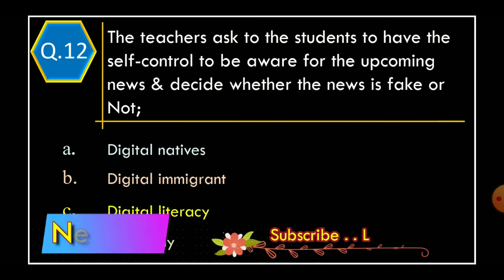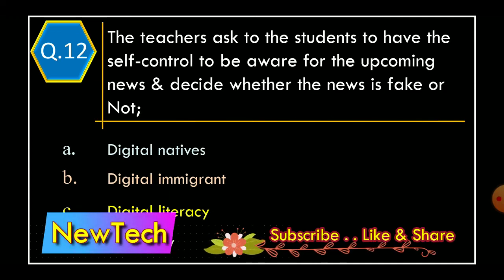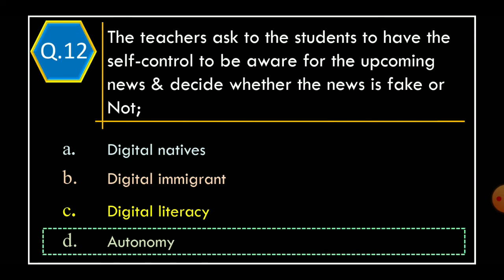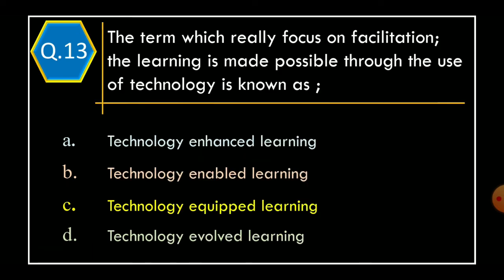Question 12: The teacher asks students to have self-control, to be aware of upcoming news, and decide whether the news is fake or not. This refers to: Option A: Digital natives. Option B: Digital immigrant. Option C: Digital literacy. Option D: Autonomy. The correct option is Option D: Autonomy.